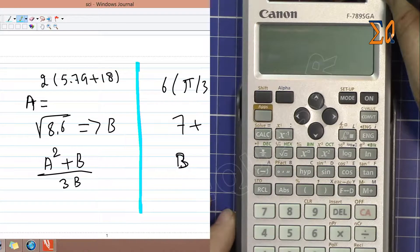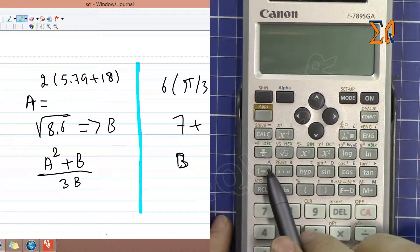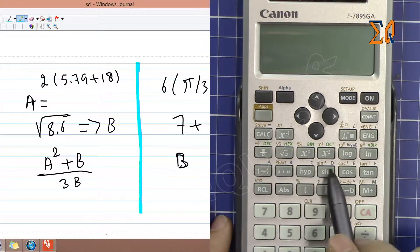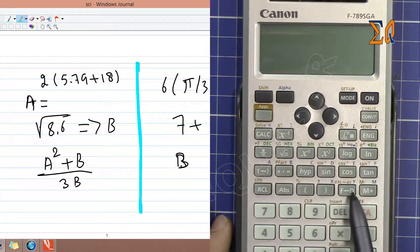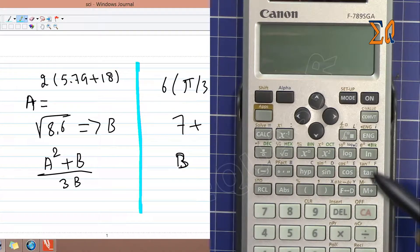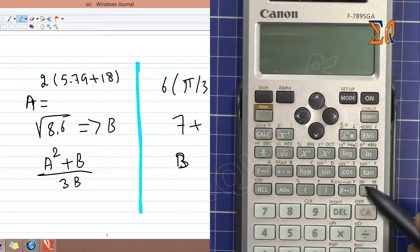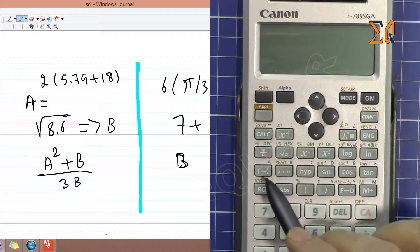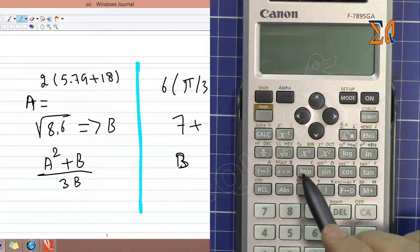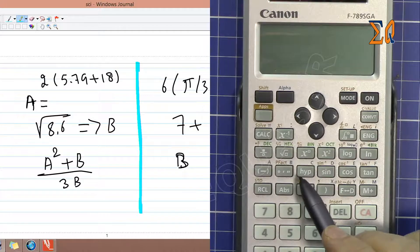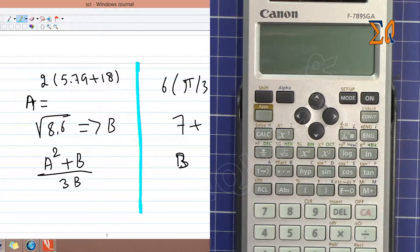This calculator has the following memories labeled A, B, C, D, E, F, X, and Y, and also it has one additional memory which every calculator has and that's called M. The M is different because you can add to it, and these other memories are independent. As soon as you put a new value, the previous value will be deleted.